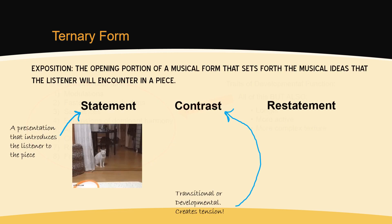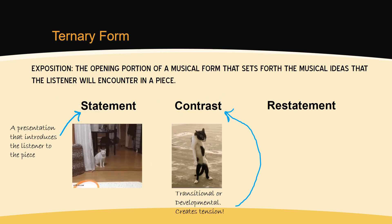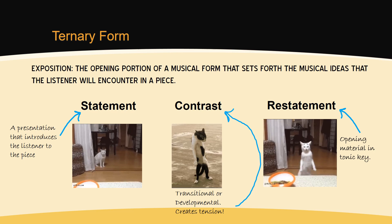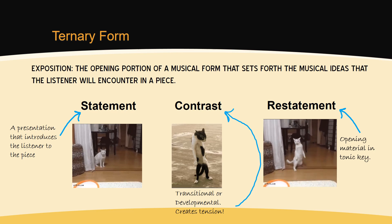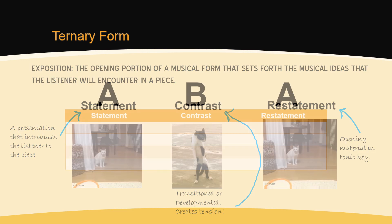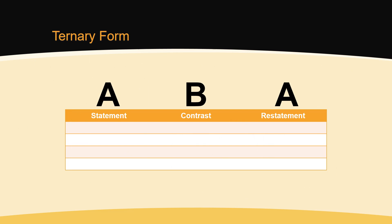As stated earlier, the goal of the contrasting section is to create tension. The restatement brings back opening material and releases the tension of the contrasting section, because we return to familiar melodic and harmonic material. The restatement generally returns to and concludes in the tonic home key. Ternary form contains these exact traits of statement, contrast, and restatement.